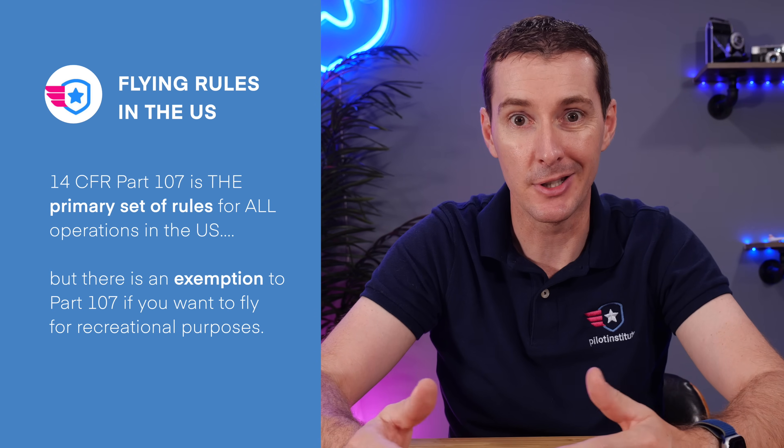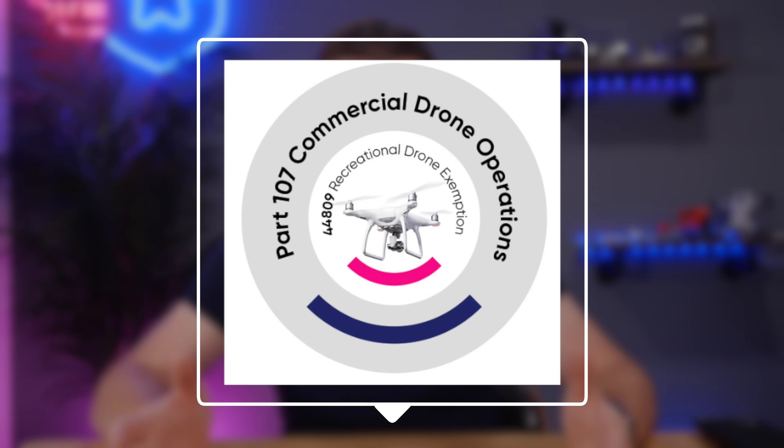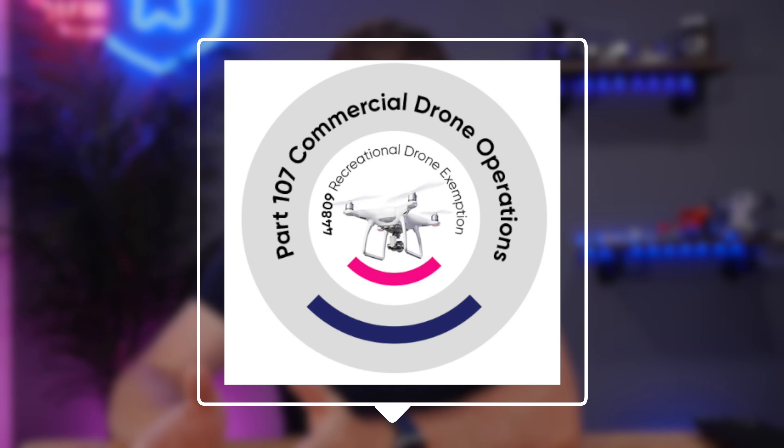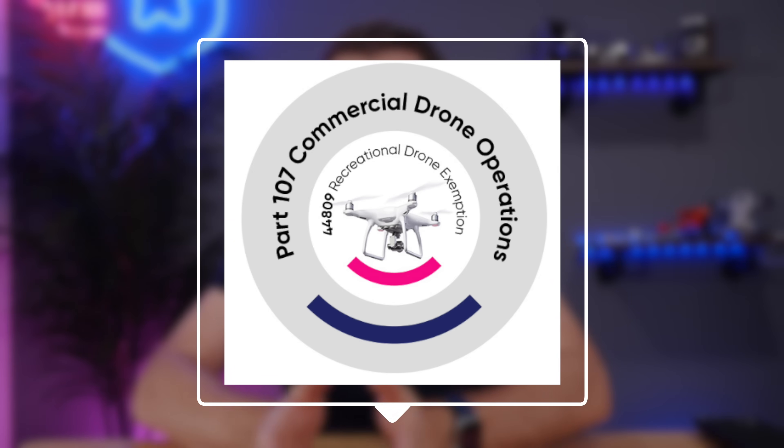The FAA — actually Congress — decided to carve out a little section called USC 44809, which is an exemption from Part 107 for people who want to fly their drone for fun. Congress basically said, if somebody's going to fly their drone for fun, they don't need to follow Part 107. They need to follow a different, simpler set of regulations. So Part 107 and 44809 are two different sets of regulations — two different things you need to follow.